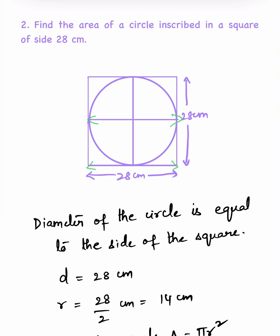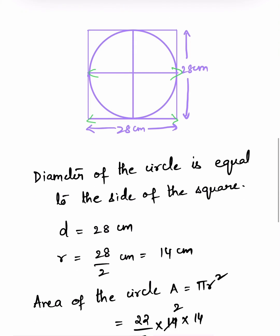So diameter is 28 cm. What is the radius? 28 by 2, which is 14 cm.